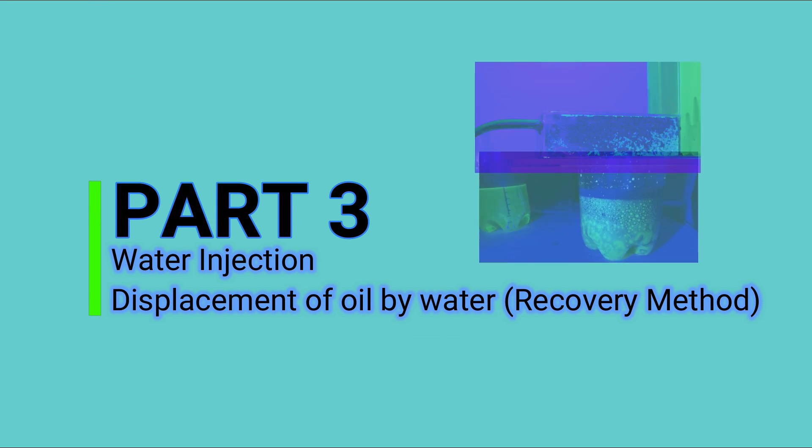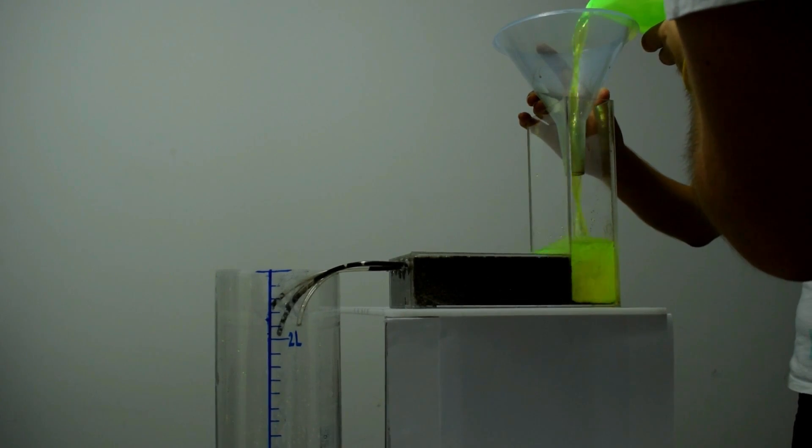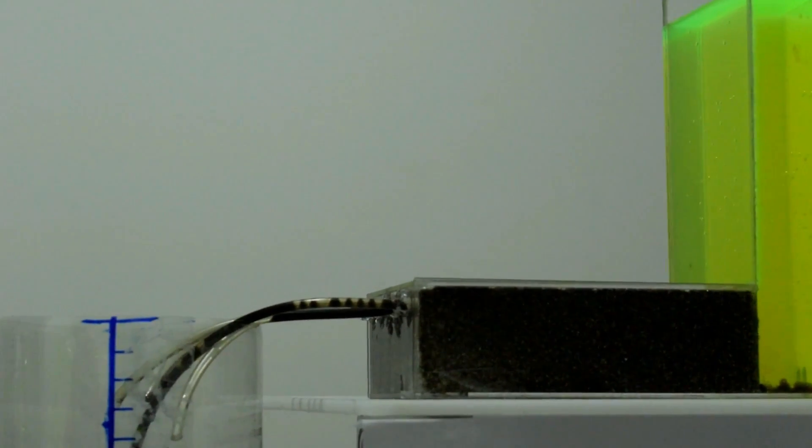Part number three: water injection as recovery method. The objective is to produce oil and calculate the recovery factor and the cost per barrel. How did we do it? We injected 2000 cubic centimeters of water in the porous medium again, but this time for recovering oil.